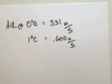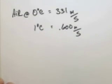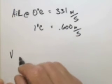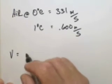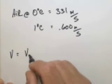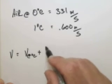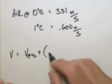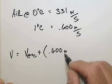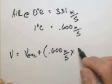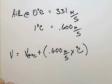From this, we can derive a formula to determine the speed of sound in air at a particular temperature. If we know the speed of sound at zero degrees Celsius and simply add that to 0.600 meters per second times the increase in temperature in Celsius.